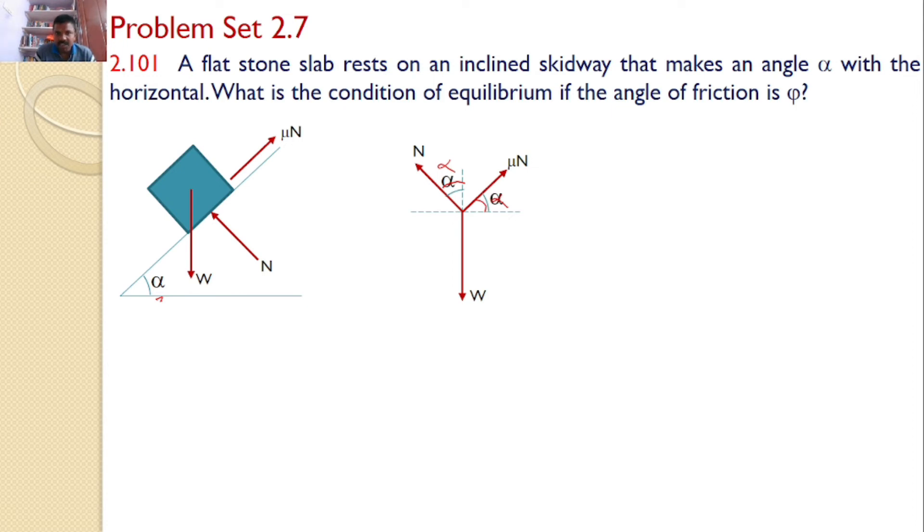Resolve these forces along x-axis and y-axis. W is vertical, you need not resolve. Mu N makes an angle alpha with the horizontal. Hence, horizontal component is mu N cos alpha and vertical component is mu N sin alpha. Similarly, N makes an angle alpha with the vertical. Hence, vertical component is N cos alpha and horizontal component is N sin alpha.